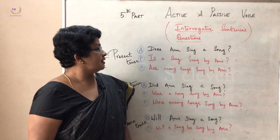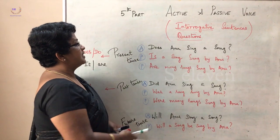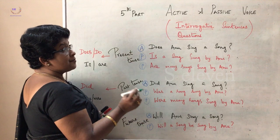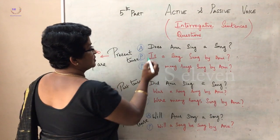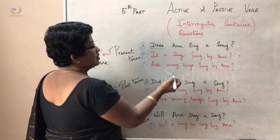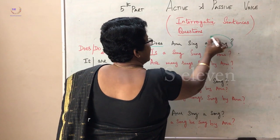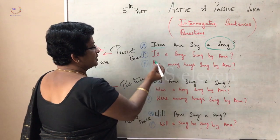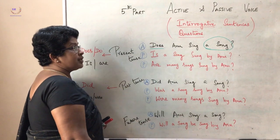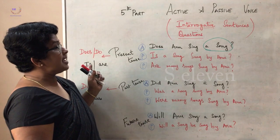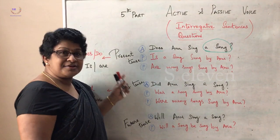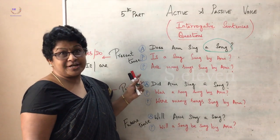Now let's move on to the example. Does Anu sing a song? This is present tense interrogative because of does. The object is a song, and it is singular, so try with is. Is a song sung by Anu? One more thing: if you change an interrogative sentence from active to passive, it should remain in the question form. Don't change to statements.